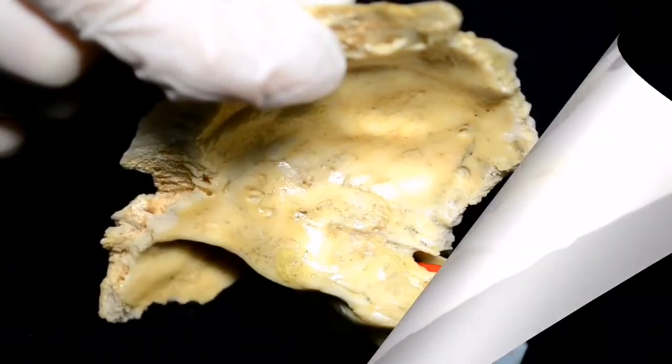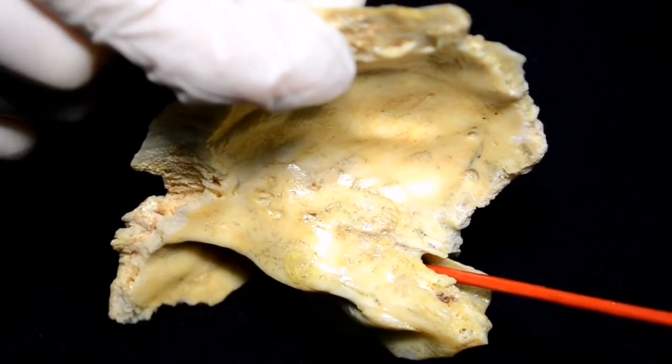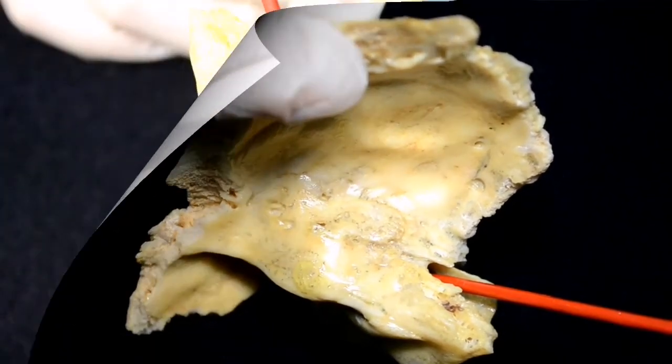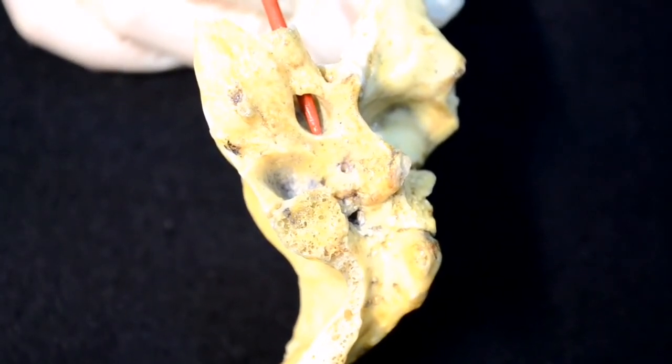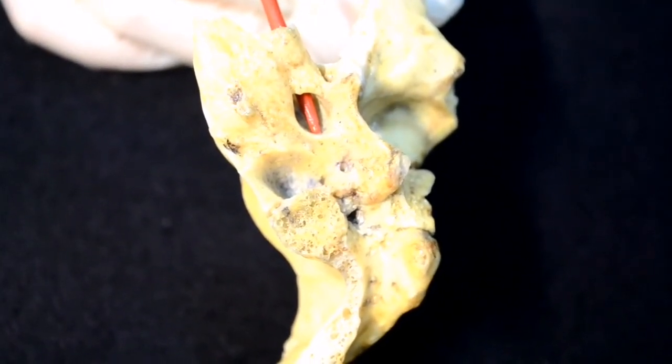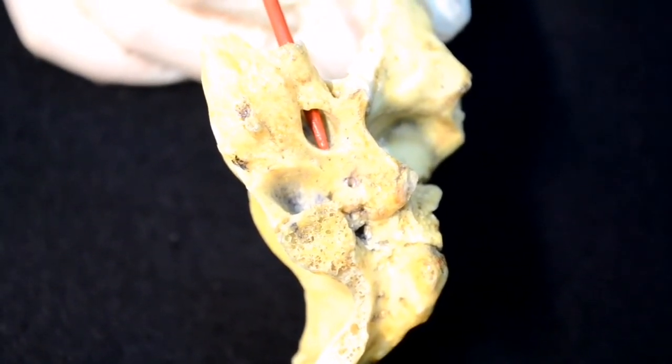It opens by foramen caroticum internum on the apex of the pyramid. Canaliculi caroticotympanici begin from the walls of the carotid canal and pass to the tympanic cavity.